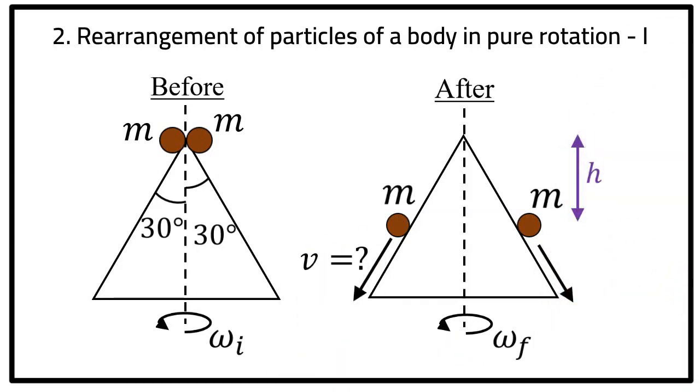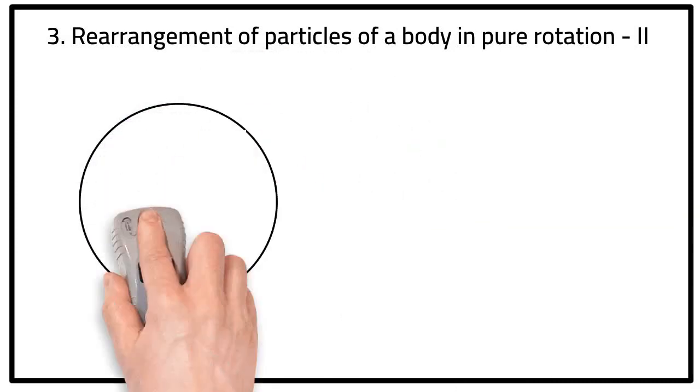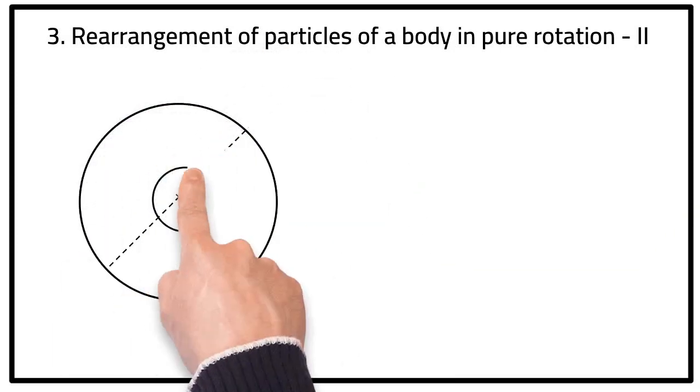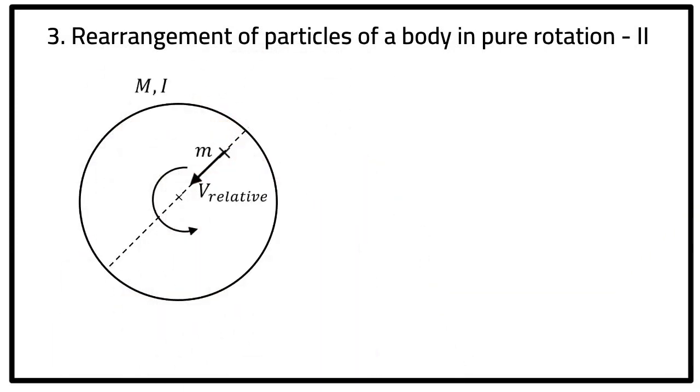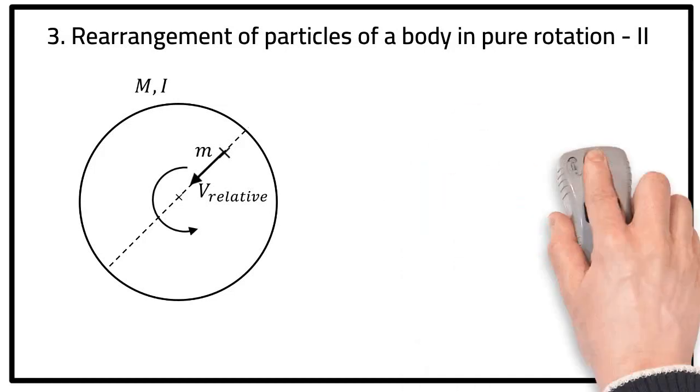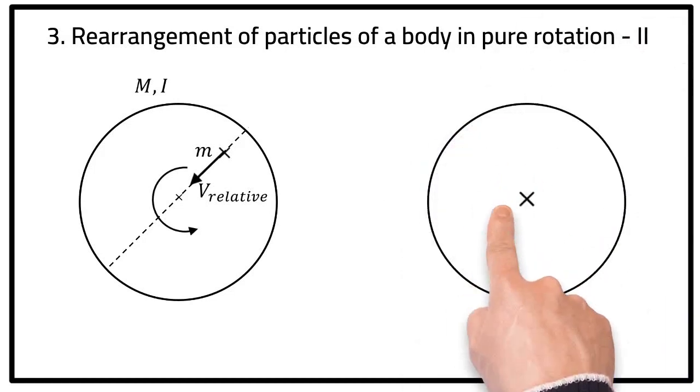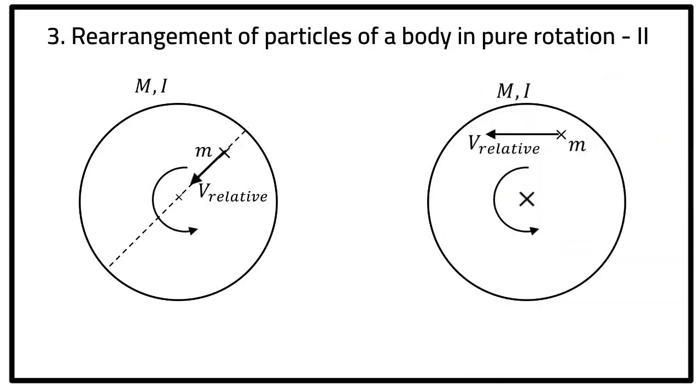In the third question type involving rearrangement of masses relative to each other, you might be given a rotating disk with a mass on it, for example an insect, that is moving in straight line relative to the disk at a constant relative speed, either along the diameter or along a chord. And you will be expected to determine the angular speed of the disk as a function of the position of the mass on the disk.